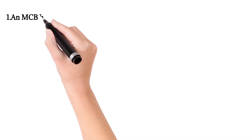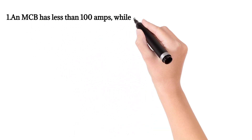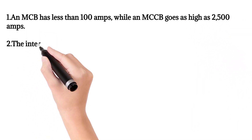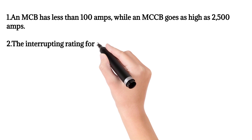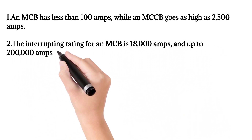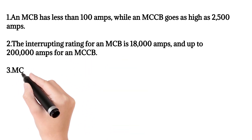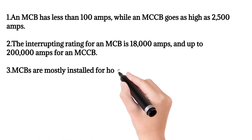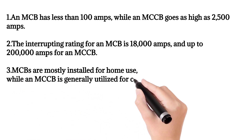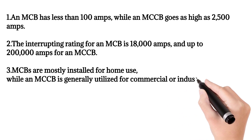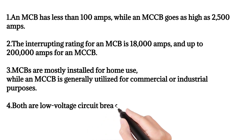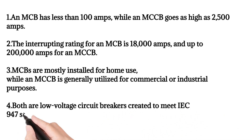Key differences summary: 1. An MCB has less than 100 amps, while an MCCB goes as high as 2,500 amps. 2. The interrupting rating for an MCB is 18,000 amps, and up to 200,000 amps for an MCCB. 3. MCBs are mostly installed for home use, while an MCCB is generally utilized for commercial or industrial purposes. 4. Both are low-voltage circuit breakers created to meet IEC 947 standards.